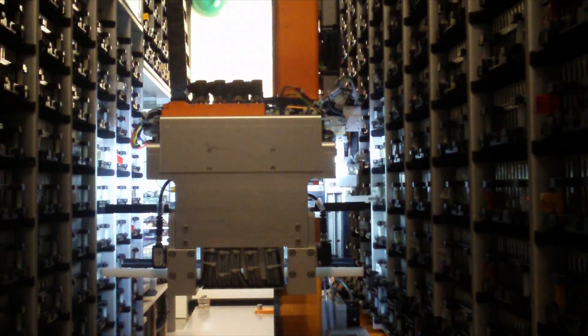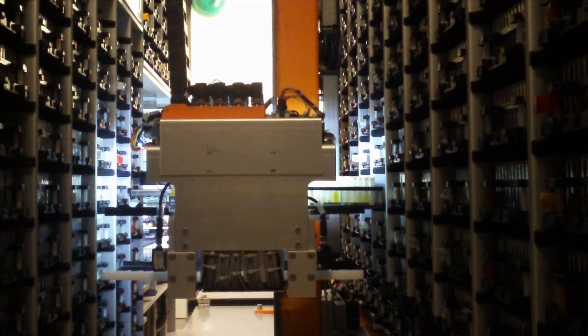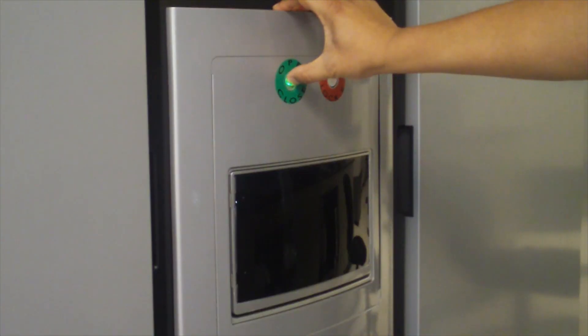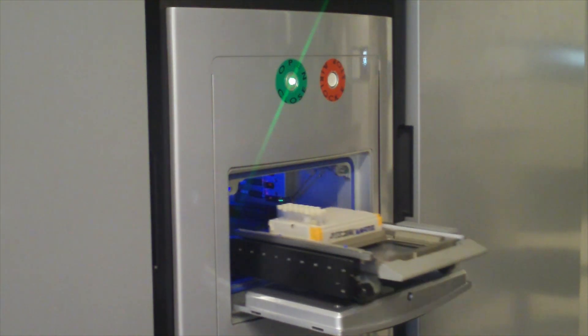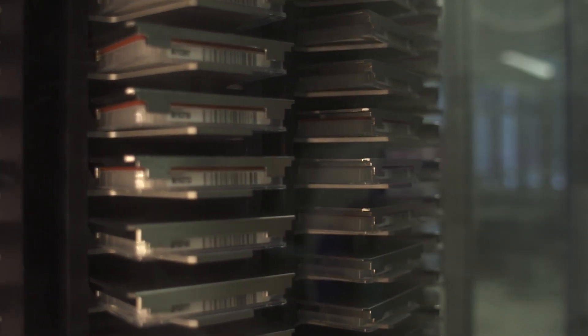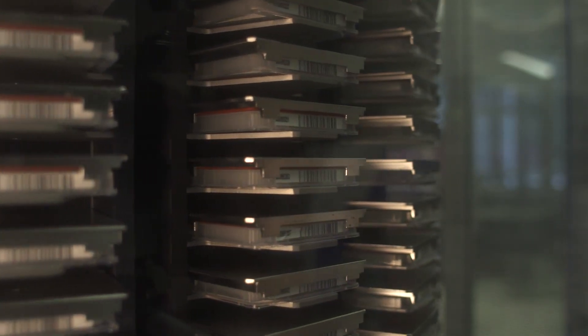The NCATS robotic system enables researchers to routinely test a library of 450,000 chemical compounds. Part of that library consists of the NCATS pharmaceutical collection, which includes most of the approved and investigational drugs from around the world.